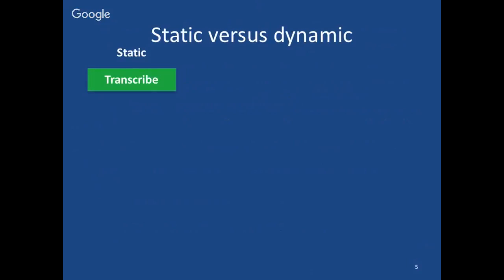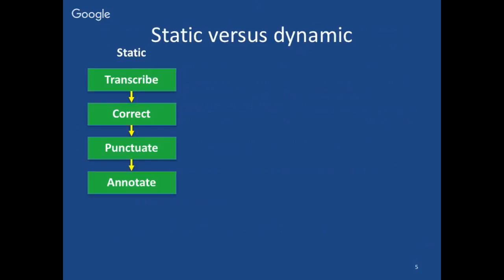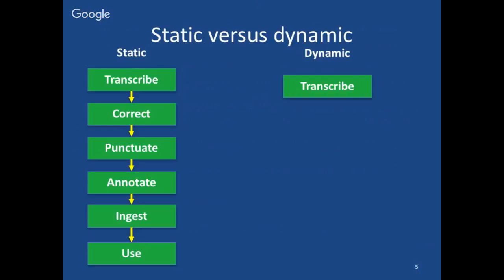The static versus dynamic contrast I'm drawing here is one between a straight-line workflow that corresponds closely to the traditional publishing model and a dynamic process. The static process consists of steps performed one after another: first transcriptions are made, then corrected, punctuated, annotated — often by expert editors. Finally, once all these processes have been completed and a review procedure undertaken, they are set into their final form and ingested into a static database, at which point they can be used by the user base.